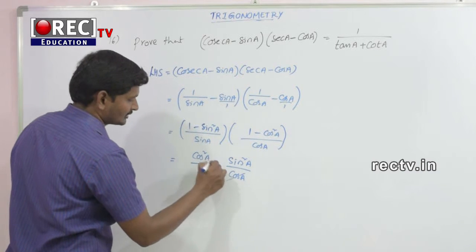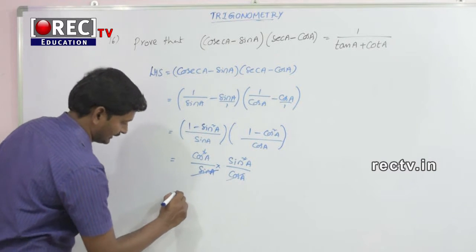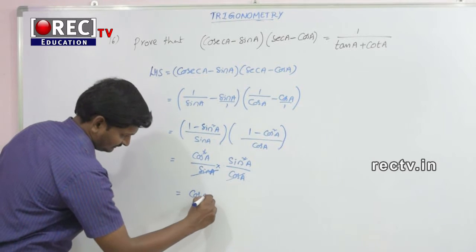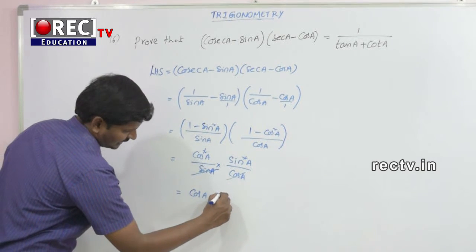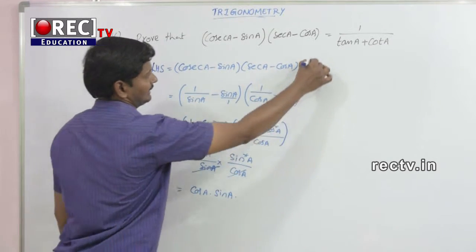Now, cos(a) and cos(a) cancel, and sin(a) and sin(a) cancel. That gives us cos(a) into sin(a). This is the simplified LHS.